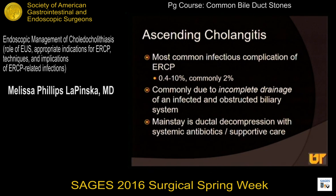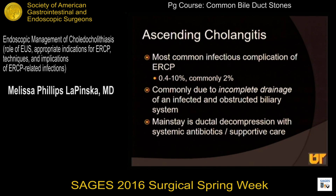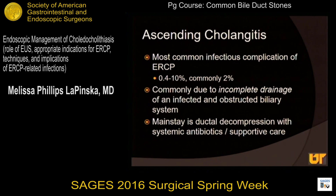Ascending cholangitis is the most common infectious complication related to ERCP, ranging from 0.5% up to 10% depending on the study. The most important determinant of its development is obtaining complete drainage of the bile duct. Incomplete drainage of the common bile duct usually leads to infection because of the introduction of bacteria from the duodenal lumen, combined with stasis. The mainstay of treatment is ductal decompression, with supportive care including antibiotic therapy, IV fluid resuscitation, and presser use as necessary.